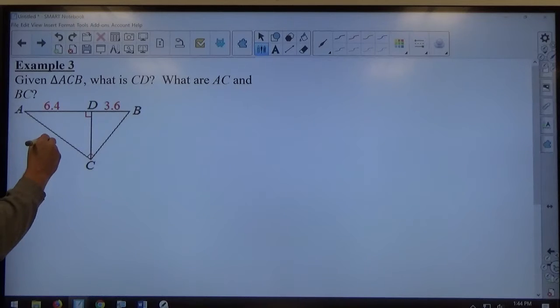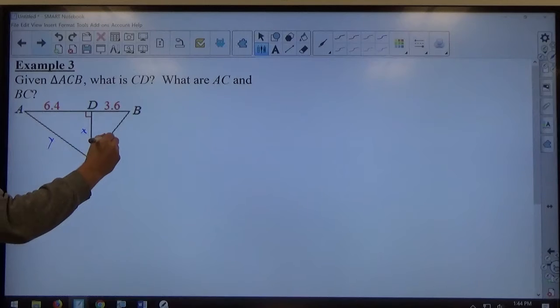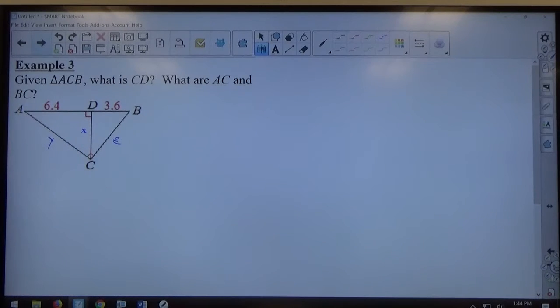All right, so we're trying to find out the measure of CD, we call that X. AC will call that Y. BC will call that Z. So there's three unknown values here.